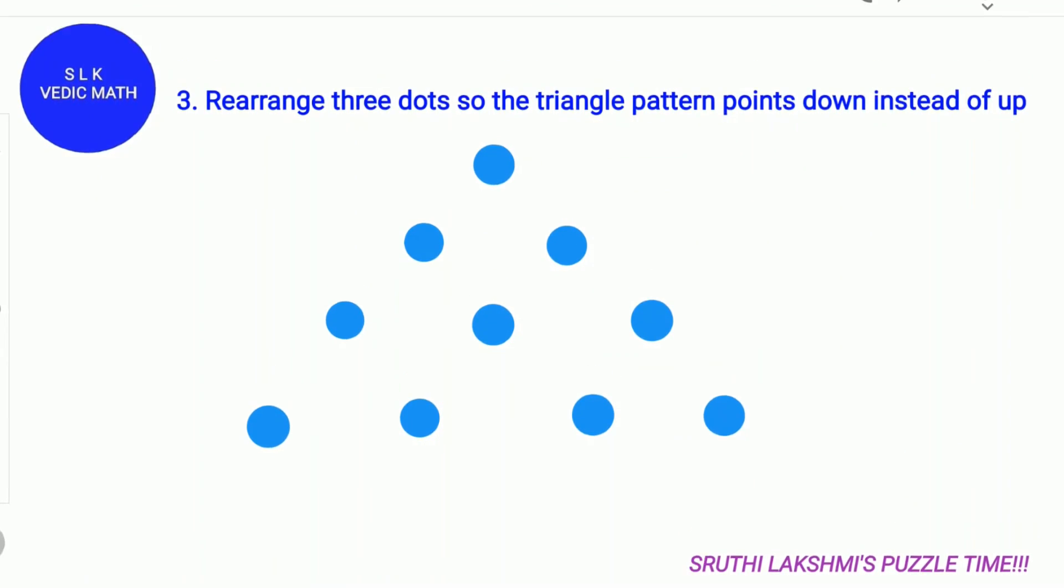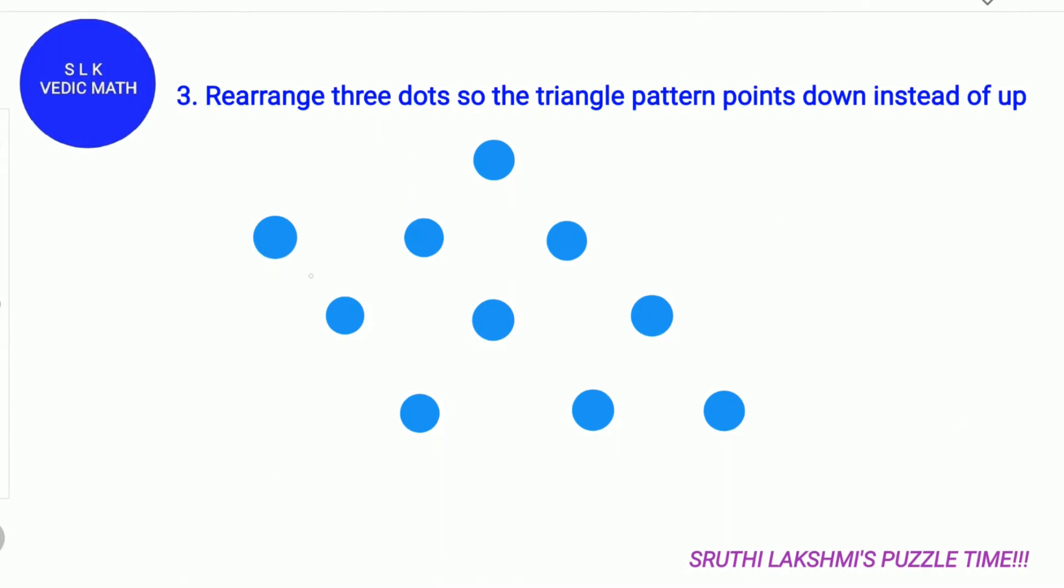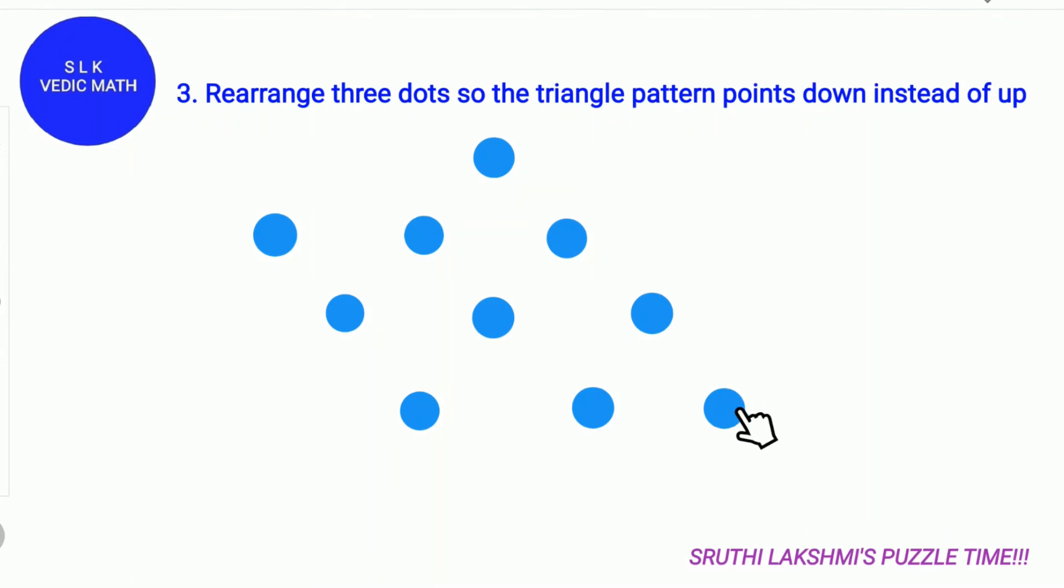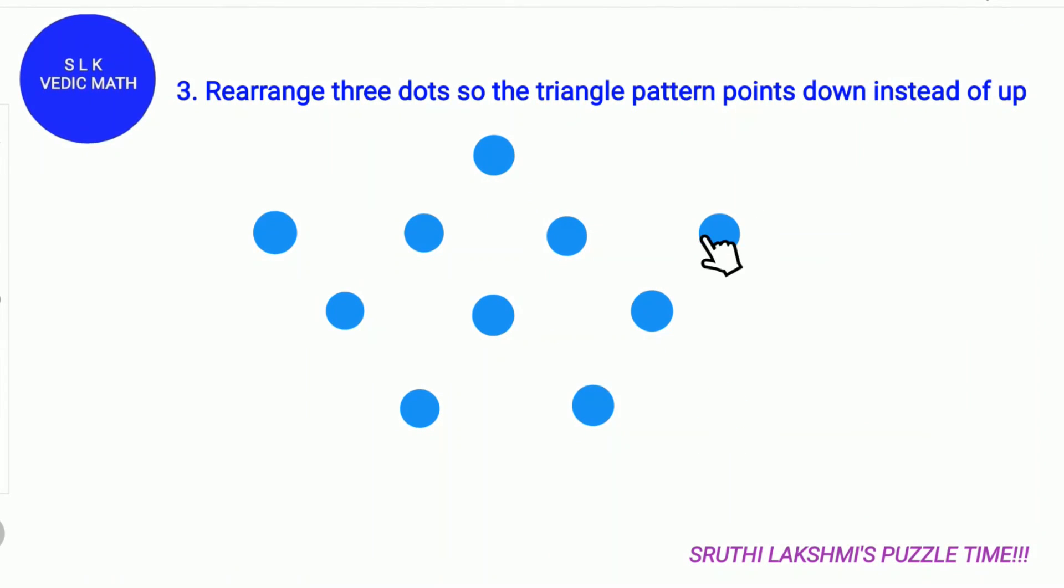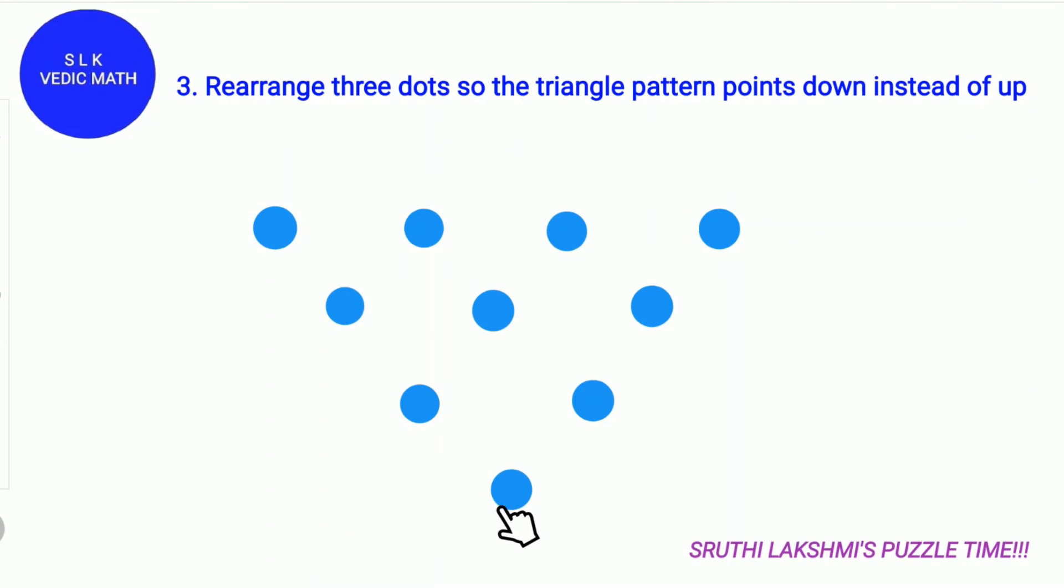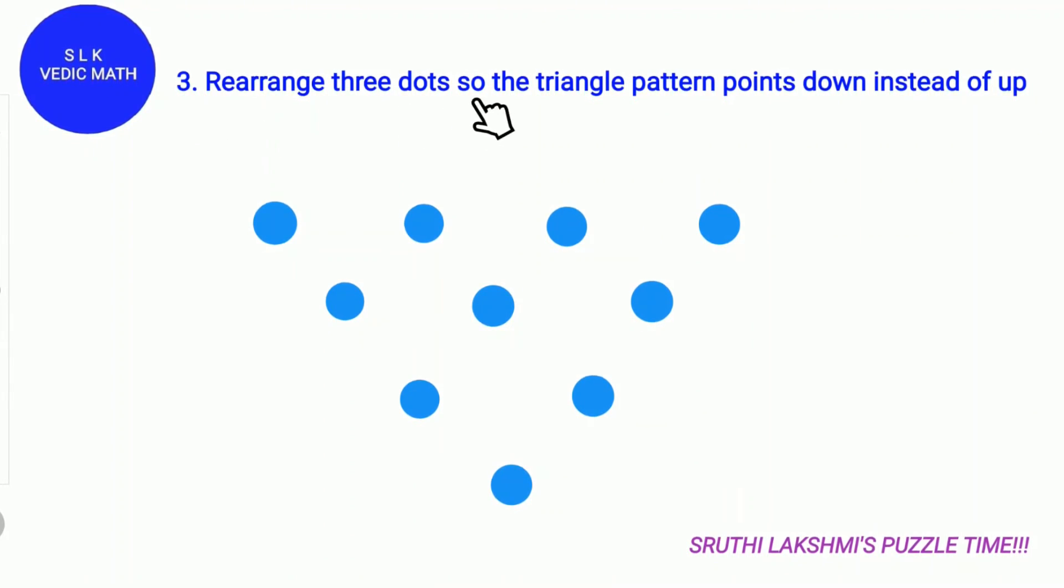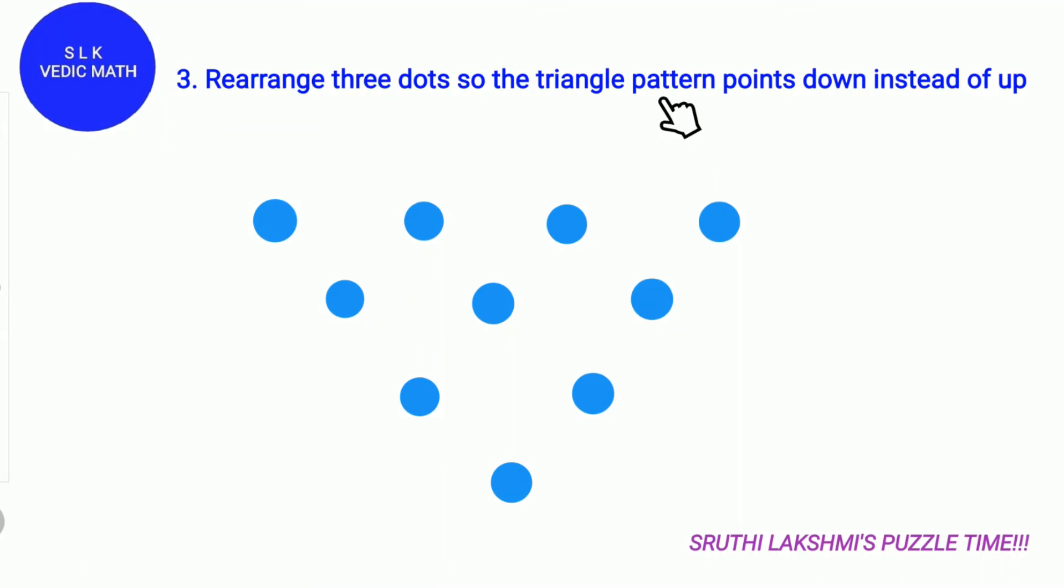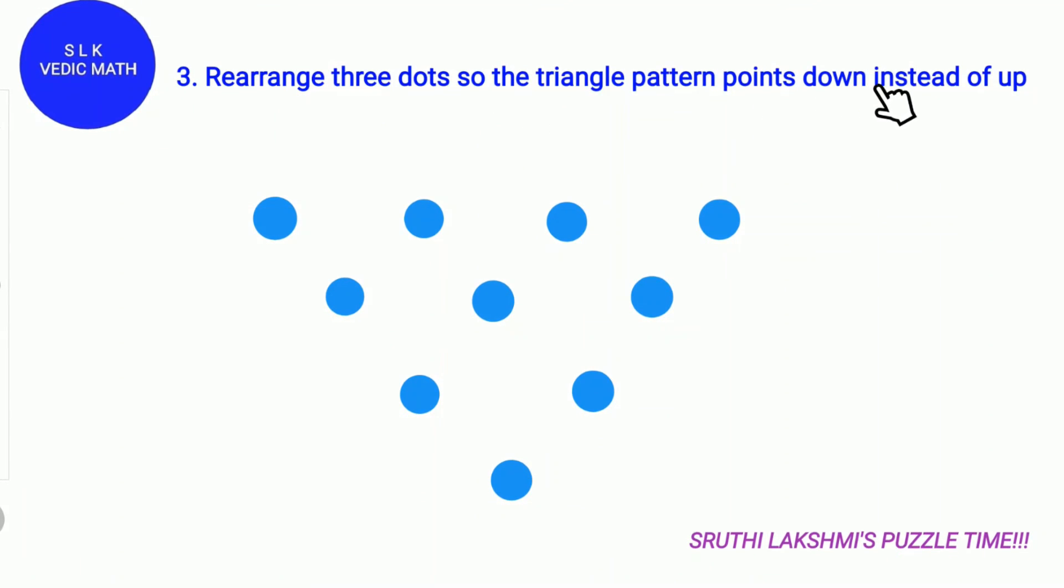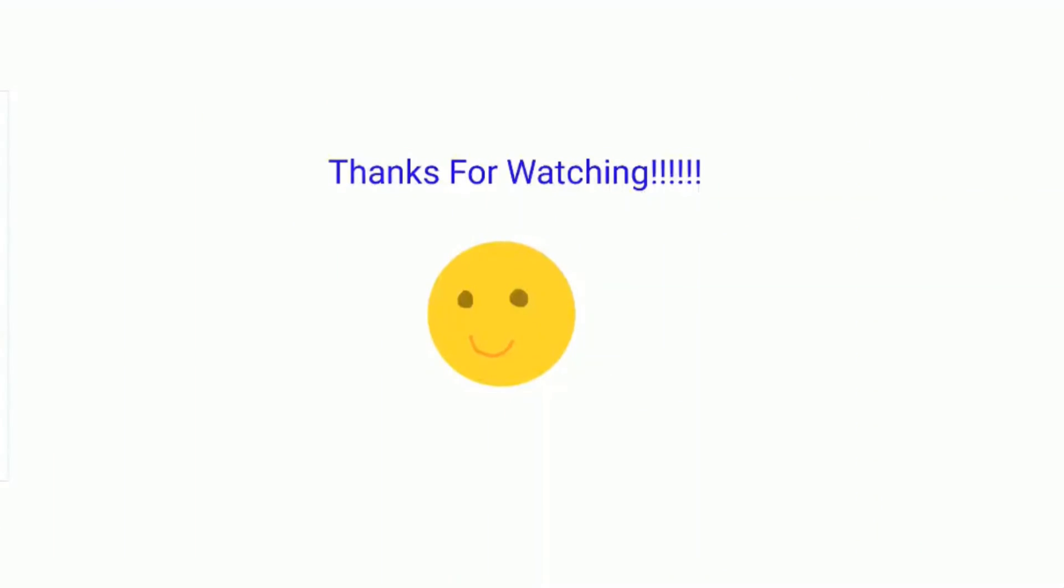Time's up! First, you move this dot over here. Next, you move this dot over here. After that, you move this dot over here. This is how we can rearrange the 3 dots so the triangle pattern points down instead of up. See you guys!